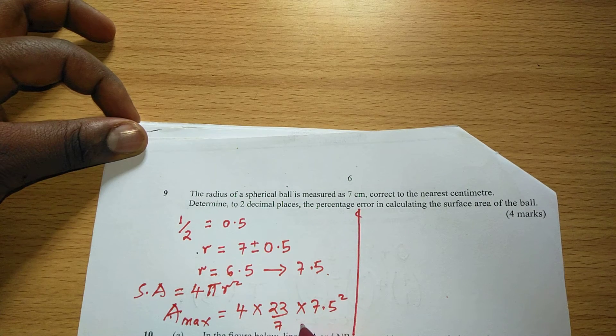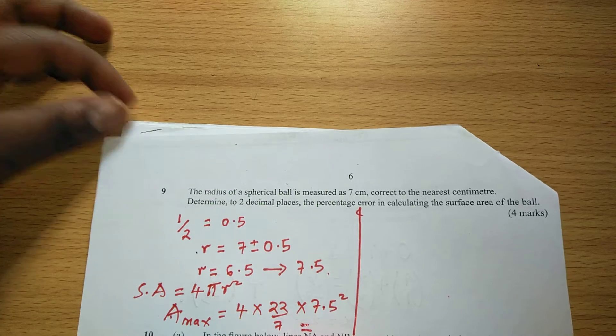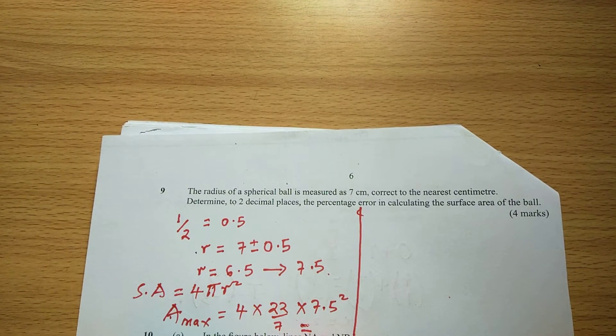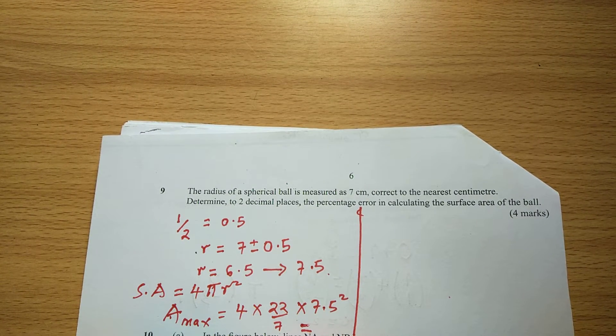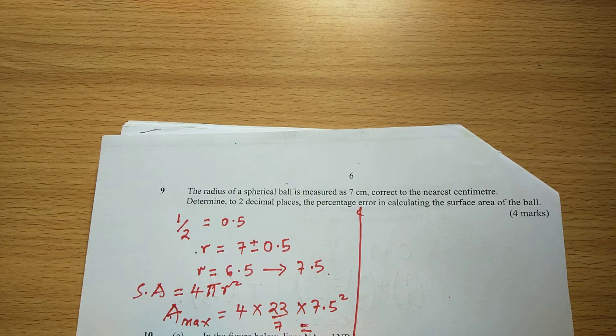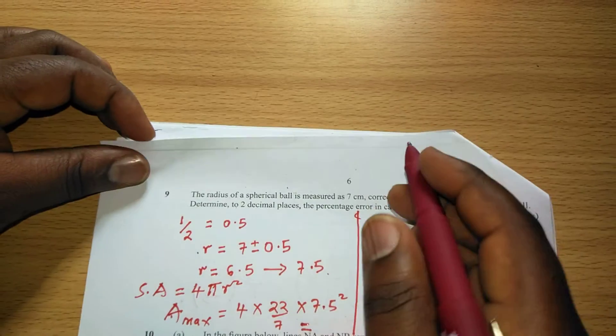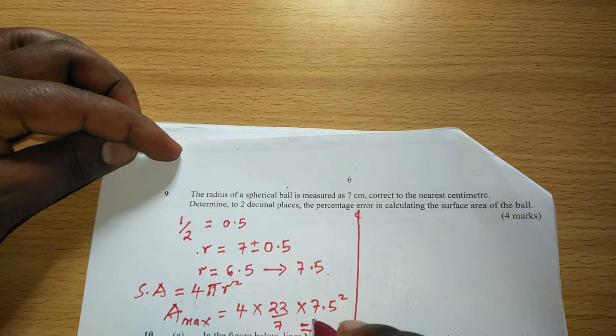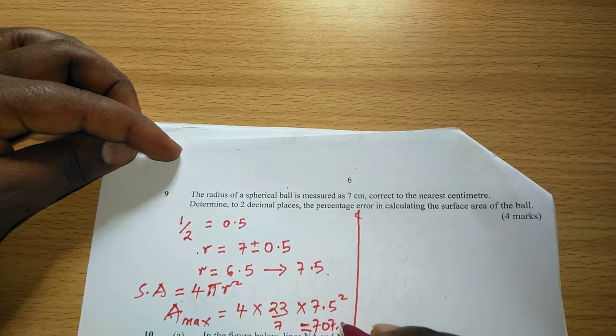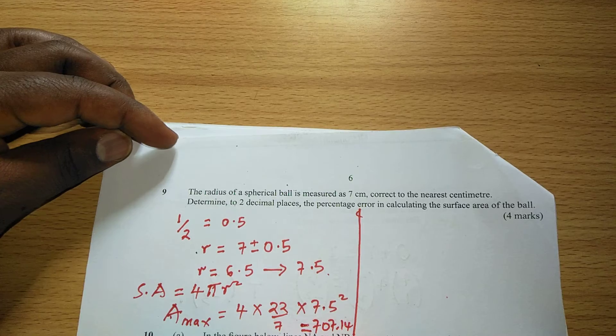So this is going to give us 4 × 22/7 times 7.5 squared. This is going to be 707.14, 707.14 square centimeters.